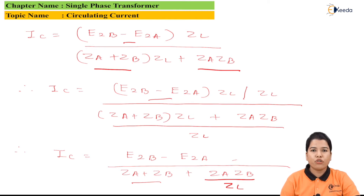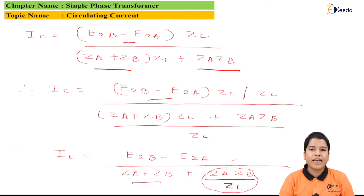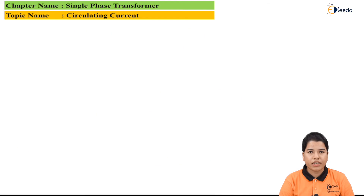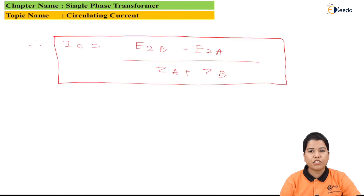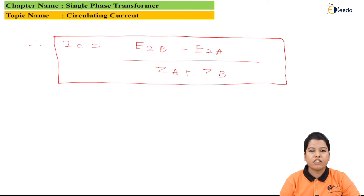At no-load condition, the value of ZL is infinity. Hence the final formula for the circulating current is: IC = (E2B − E2A) / (ZA + ZB). This is the formula for the circulating current.